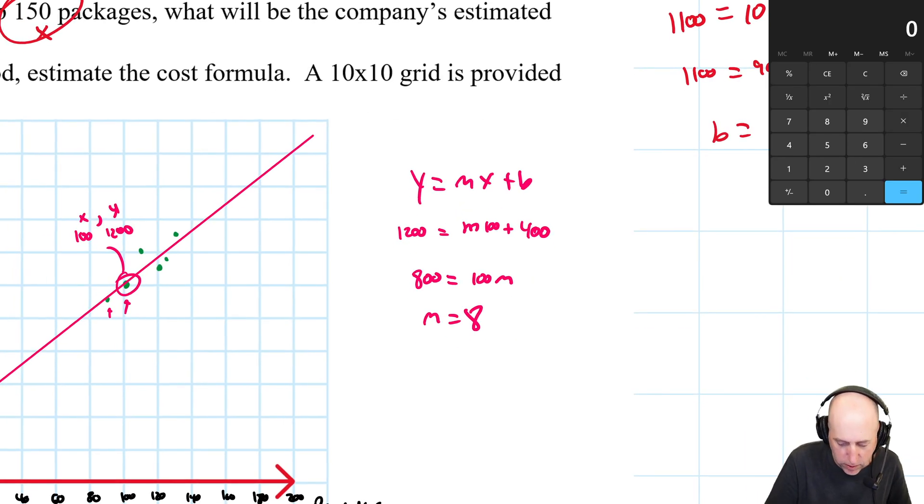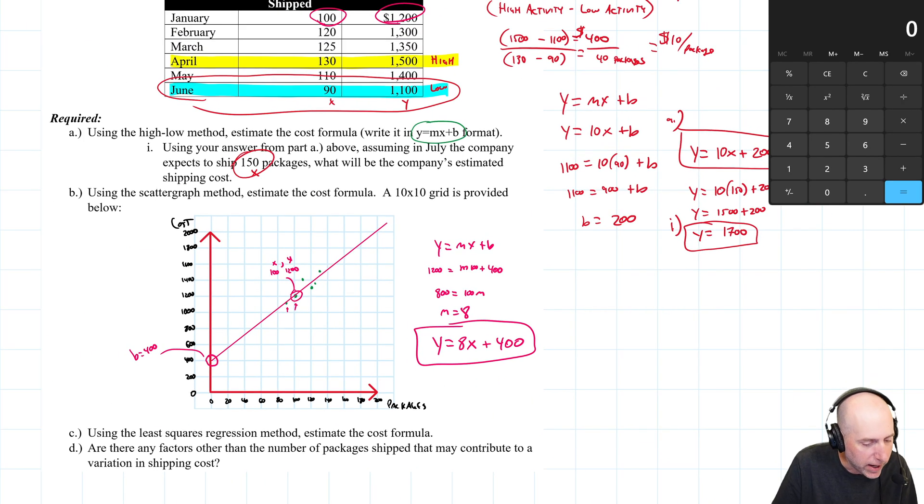There we go. So my formula for the line using a scatter graph is y equals mx, so 8x plus b plus 400. That would be my formula and my answer for part b. Alright, we've made it to the end of our scatter graph.